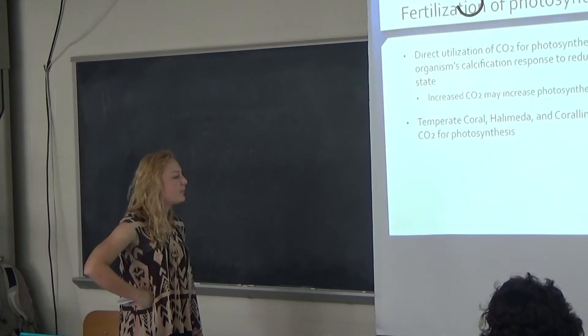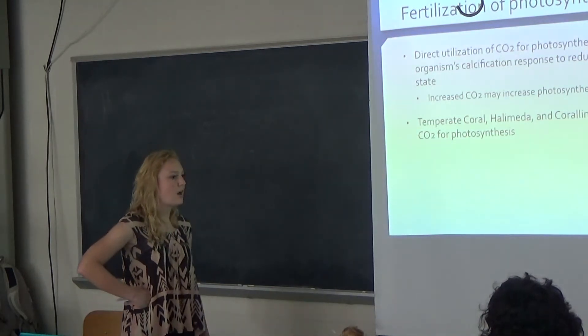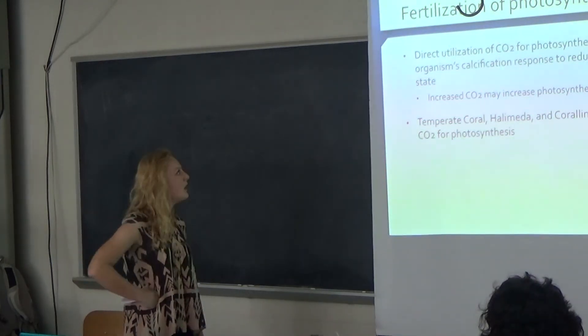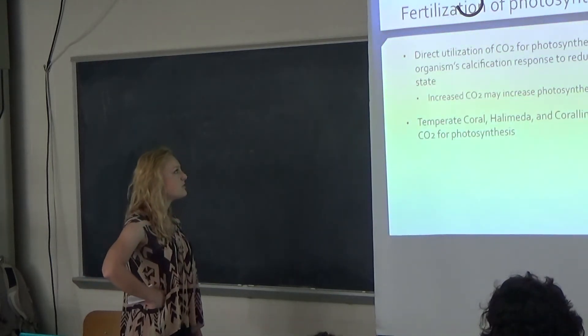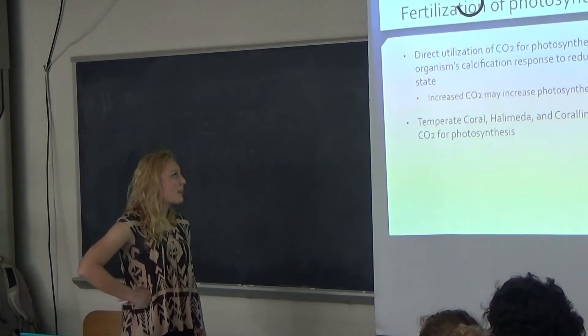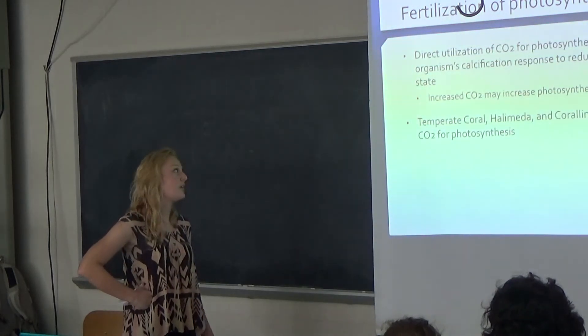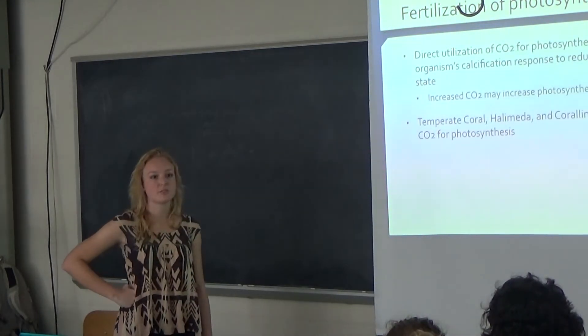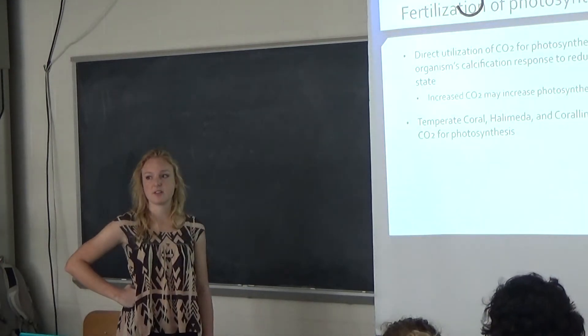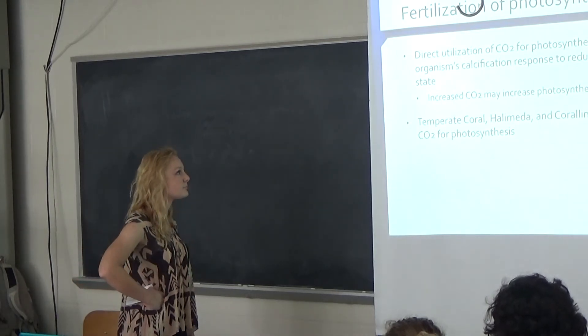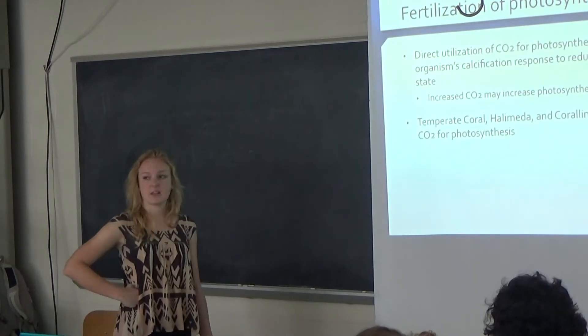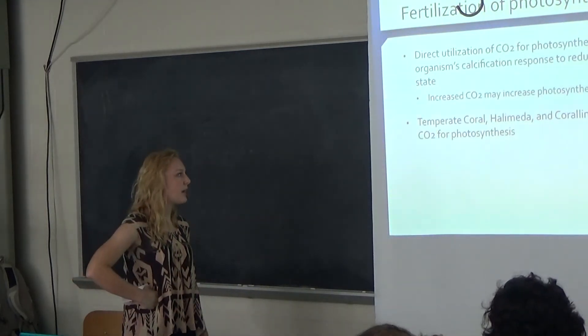Another factor that can really play in with the varying levels of the calcium carbonate calcification rates is photosynthesis. Some organisms use photosynthesis as a way to use increased CO2 levels and then increase the rate of photosynthesis. This doesn't really affect them because they use photosynthesis in order to produce their calcium carbonate shell. Some examples of this would be the temperate coral, the halimeda, and the coralline red algae.